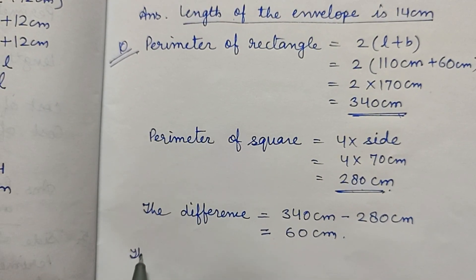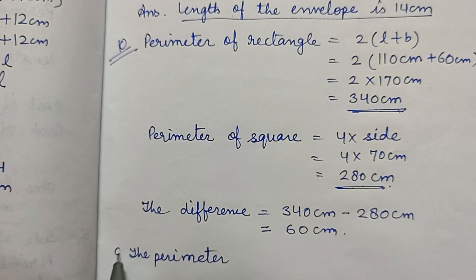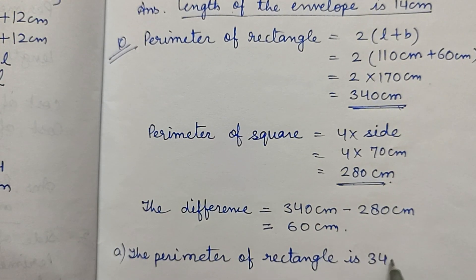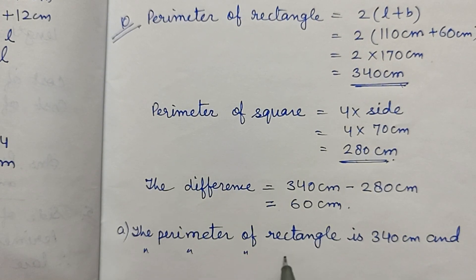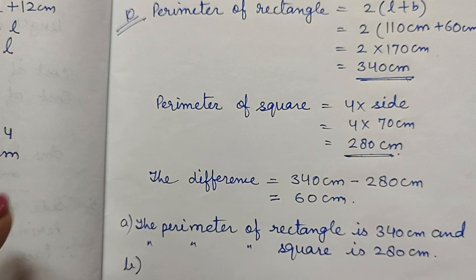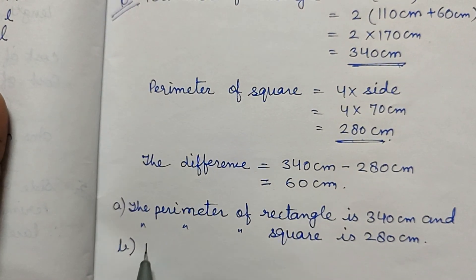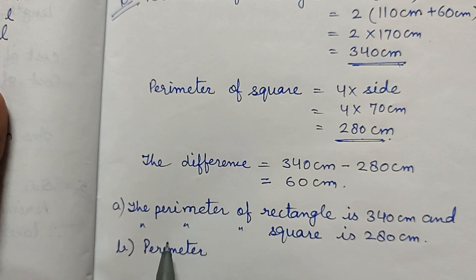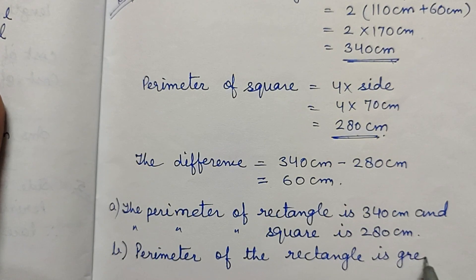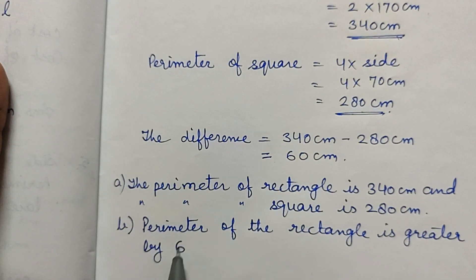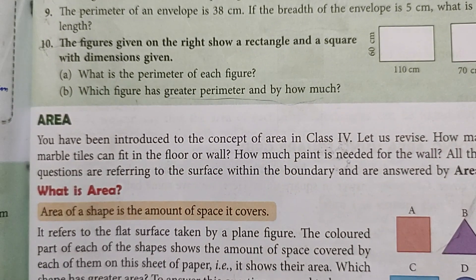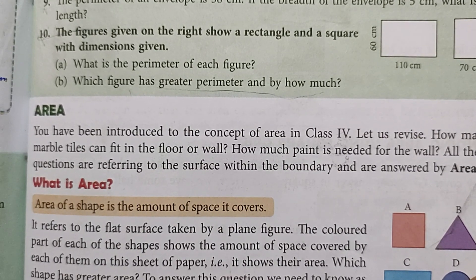The perimeter of the rectangle is greater. The difference is 340 minus 280, which equals 60 centimeters. So the perimeter of the rectangle is 340 cm, the perimeter of the square is 280 cm, and the rectangle's perimeter is greater by 60 centimeters. This completes self-practice 17a. In our next video we will discuss area. Take care, bye bye.